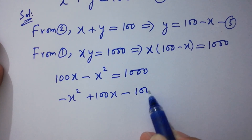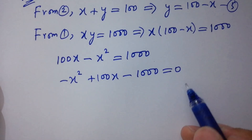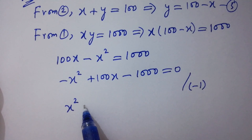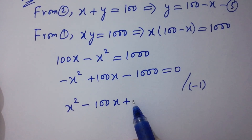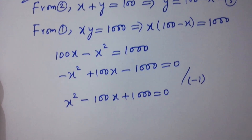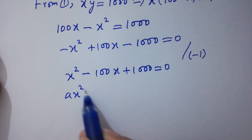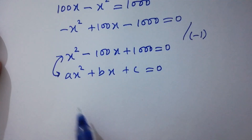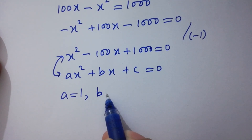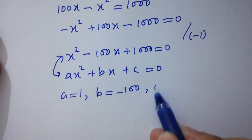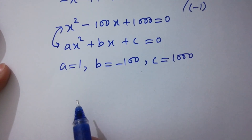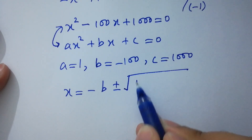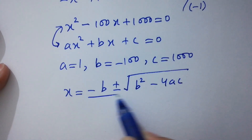Rearranging: minus x squared plus 100x minus 1000 equals 0. Divide by minus 1 on both sides, giving x squared minus 100x plus 1000 equals 0. This is a quadratic equation. Apply the quadratic formula: x equals minus b plus or minus square root of b squared minus 4ac, all over 2a.